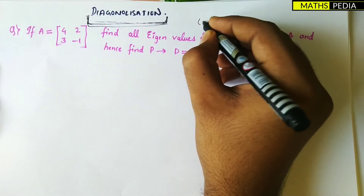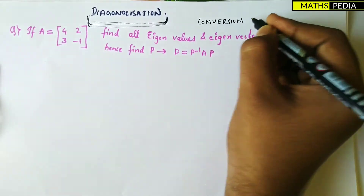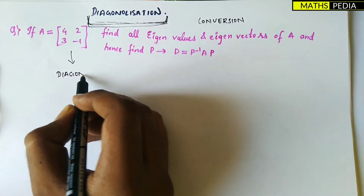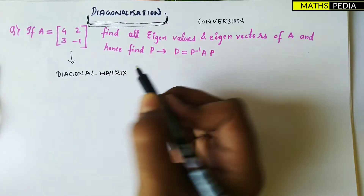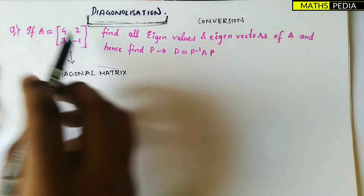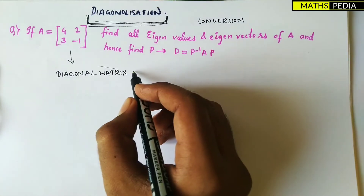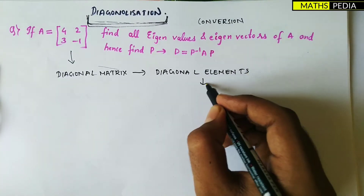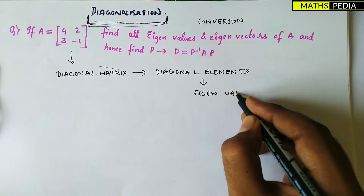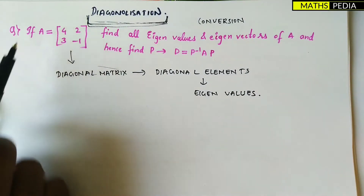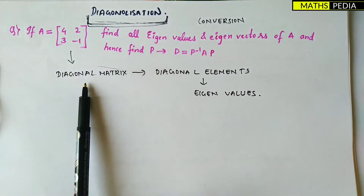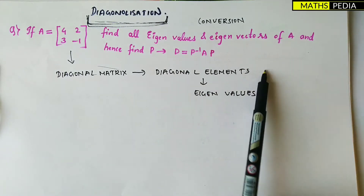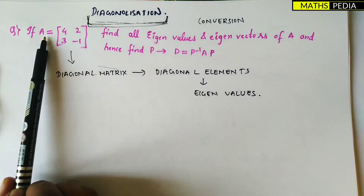Diagonalization is basically a conversion — from a given matrix A, you have to convert it into a diagonal matrix. In a diagonal matrix, only the diagonal elements are present and the non-diagonal elements will be zero. The diagonal elements of the resulting diagonal matrix will be the eigenvalues of the given matrix A.